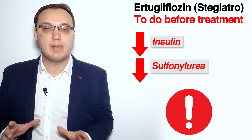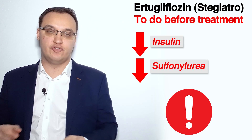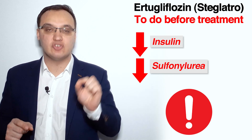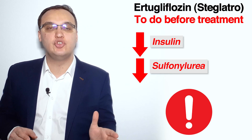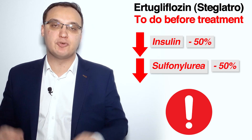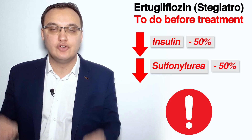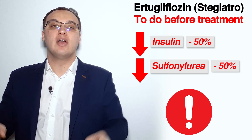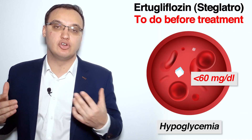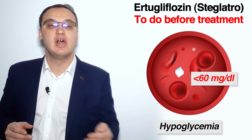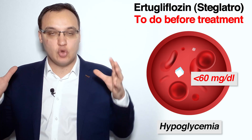Before starting Steglatro, it is very important to reduce the dose of insulin and sulfonylurea if the patient is already taking these medications. The dose is usually reduced by about 50 percent. The reason is that combining Steglatro with insulin and sulfonylurea without dose reduction can cause hypoglycemia, which is a blood glucose level of less than 60 milligram per deciliter.